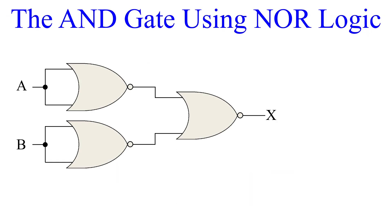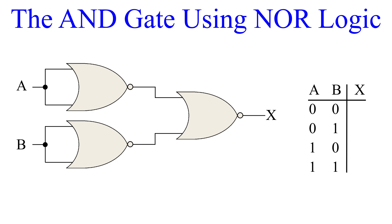Next, we will look at the AND gate using NOR logic. This will require three NOR gates to accomplish. Inputs A and B are both single inputs to their own NOR gate, just like with the NOT gate. These two gate outputs are then the inputs for the third NOR gate, which supplies our output. Let's make a truth table with the four possible input combinations. When A and B are both 0, their NOR gates will output 1s. These 1s are now the inputs to the final NOR gate — when NOR'd, two 1s will output 0. So 0 and 0 give us 0.